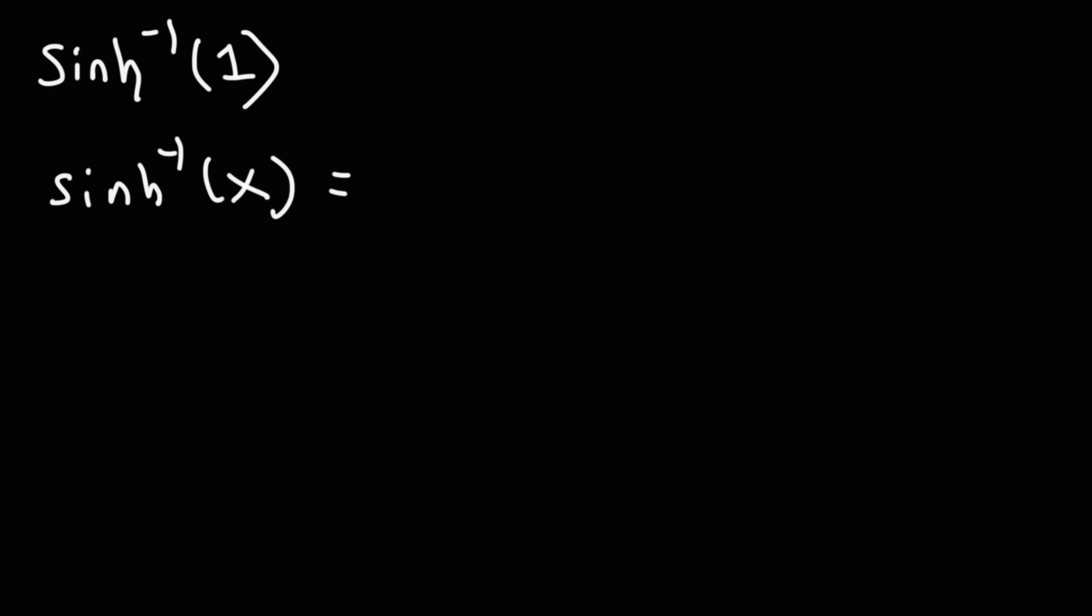The inverse hyperbolic sine of x is equal to the natural log of x plus the square root of x squared plus 1. So it's very similar to the inverse hyperbolic cosine function. The only difference is, instead of a minus sign, we have a plus sign. So now let's substitute x with 1.